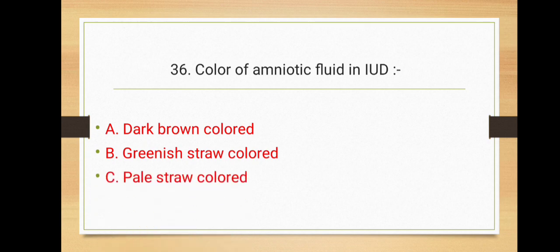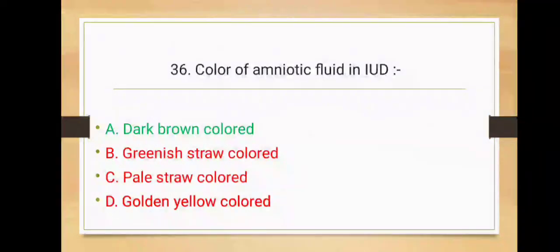pale straw colored, option D golden yellow colored. So the correct option is option A - dark brown colored is the color of amniotic fluid in IUD.